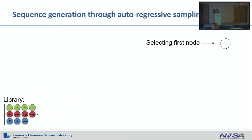I'll walk through an example for a mathematical expression. We start with the library of mathematical operators as tokens — you can see the different colored tokens. They can be binary, shown in green, which spawn two child tokens in the tree. They can be unary, shown in red, that spawn a single child token. And then we have the blue ones, which are the terminal tokens that end a tree branch.